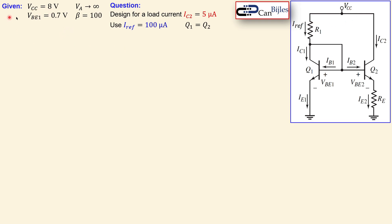So what is given: VCC is 8 volts, VBE1 is assumed to be 0.7 V. Q1 and Q2 are matched — they have the same physical dimensions, emitter areas, beta, and early voltage, which in this case is infinite. The required load current IC2 is 5 microamps, which is quite low, and the reference current is 100 microamps.